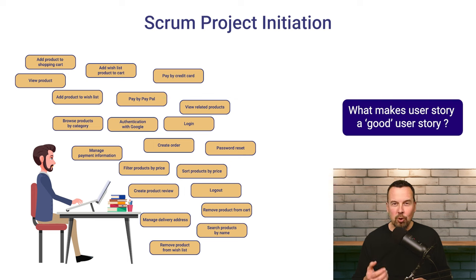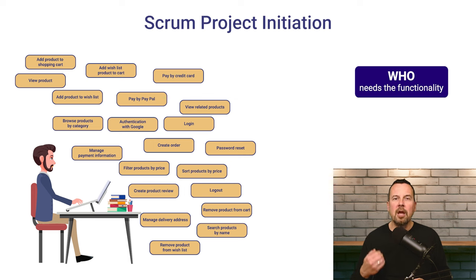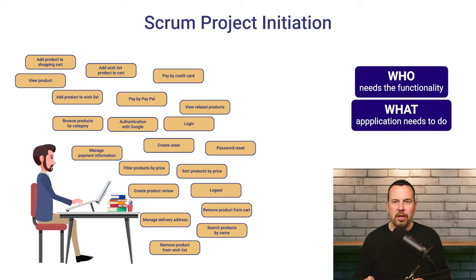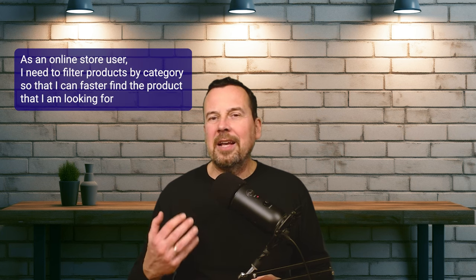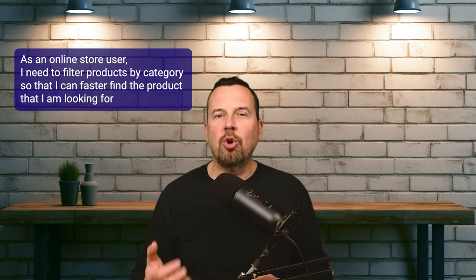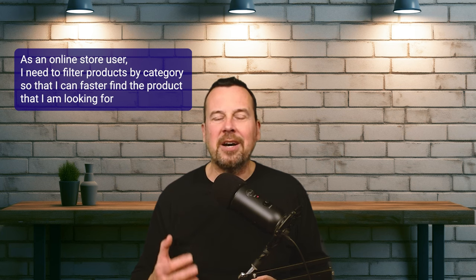A good user story must provide information about who needs the functionality, what the application needs to do, and why it is required. For example, a story can be something like: as an online store user, I need to filter products by category so that I can faster find the product that I'm looking for.